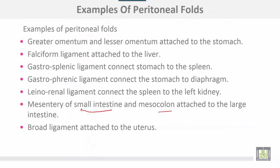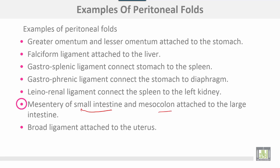Examples of peritoneal folds: the greater omentum is the first one, and the lesser omentum attaches to the stomach. The falciform ligament attaches to the liver. The gastro-splenic ligament connects the stomach to the spleen. The gastrophrenic ligament connects the stomach to the diaphragm. The lienorenal ligament connects the spleen to the left kidney. The mesentery of the small intestine and the mesocolon attach to the small intestine and the large intestine. The broad ligament attaches to the uterus.